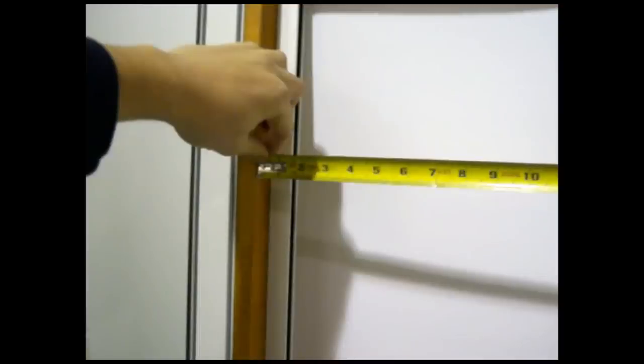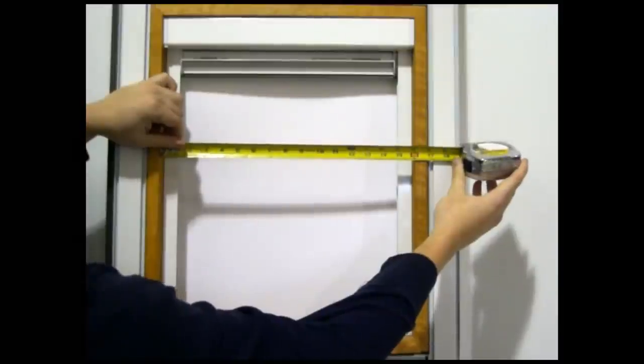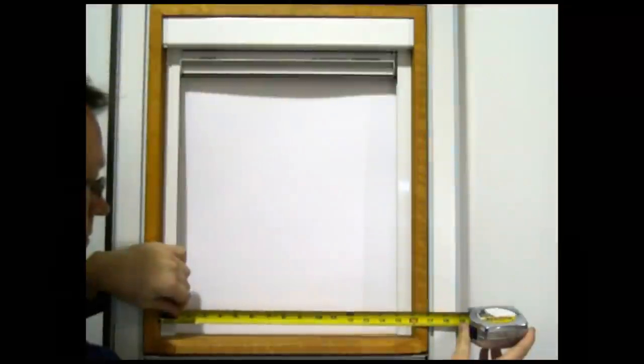You want to measure from the inside of your jamb, or the inside of your window sill, to the inside of your window sill, measuring to the nearest eighth of an inch. Take all three measurements and use the smallest one to order your window screens.